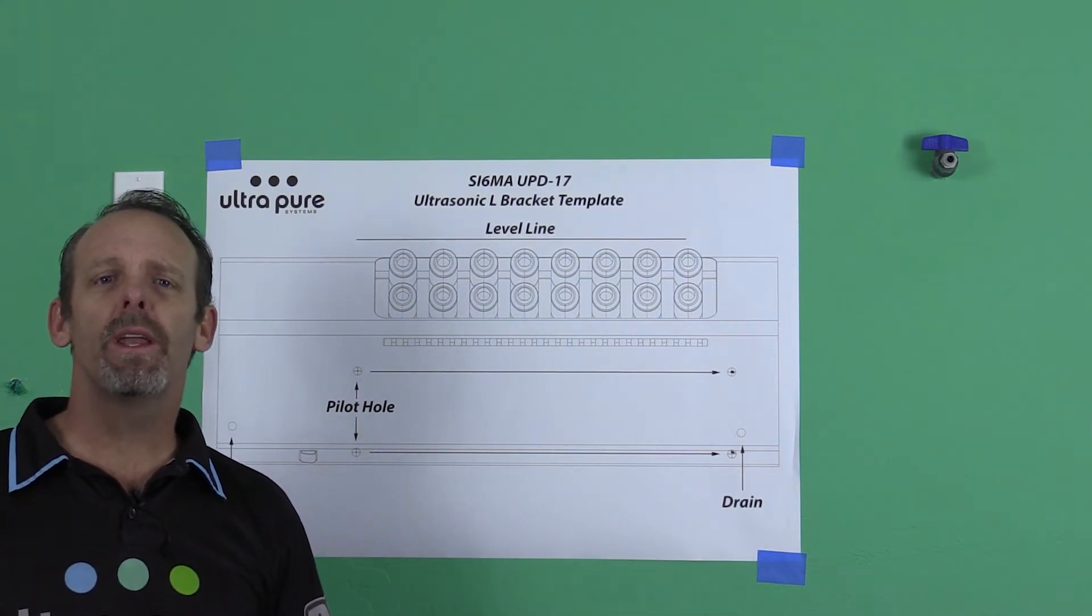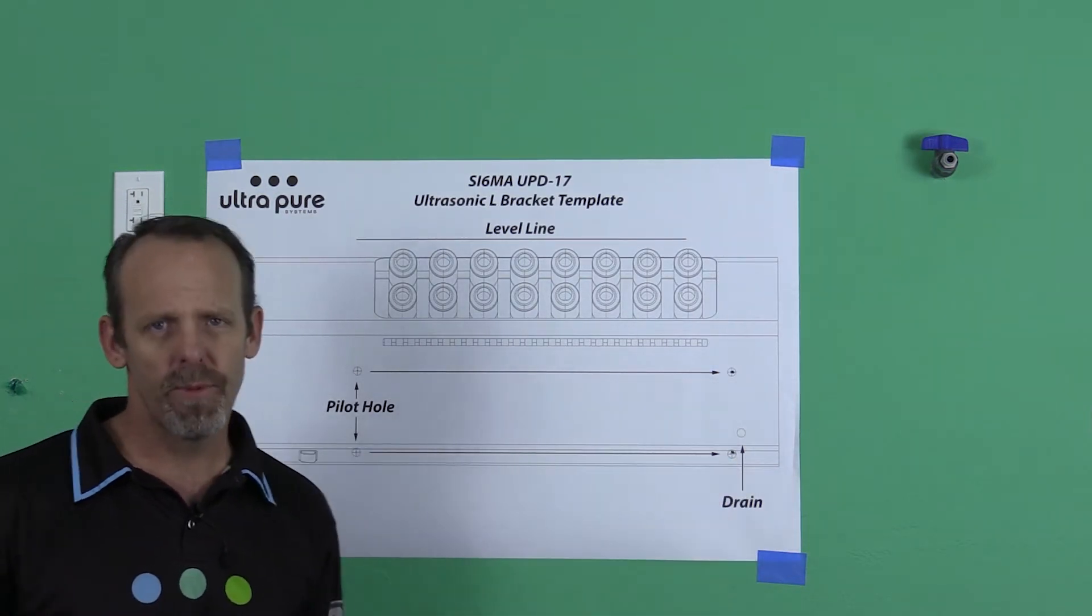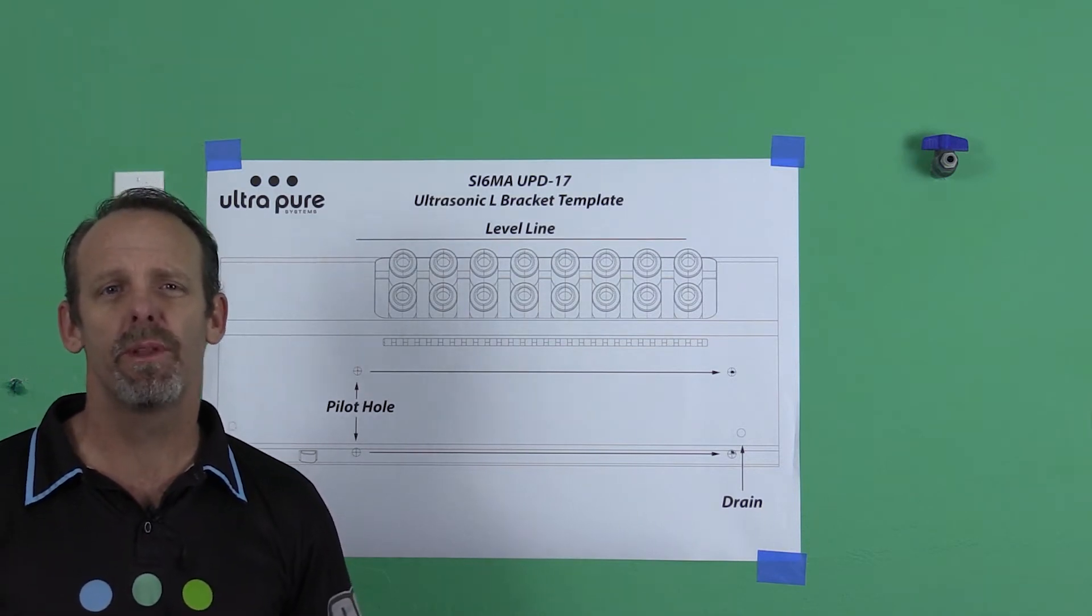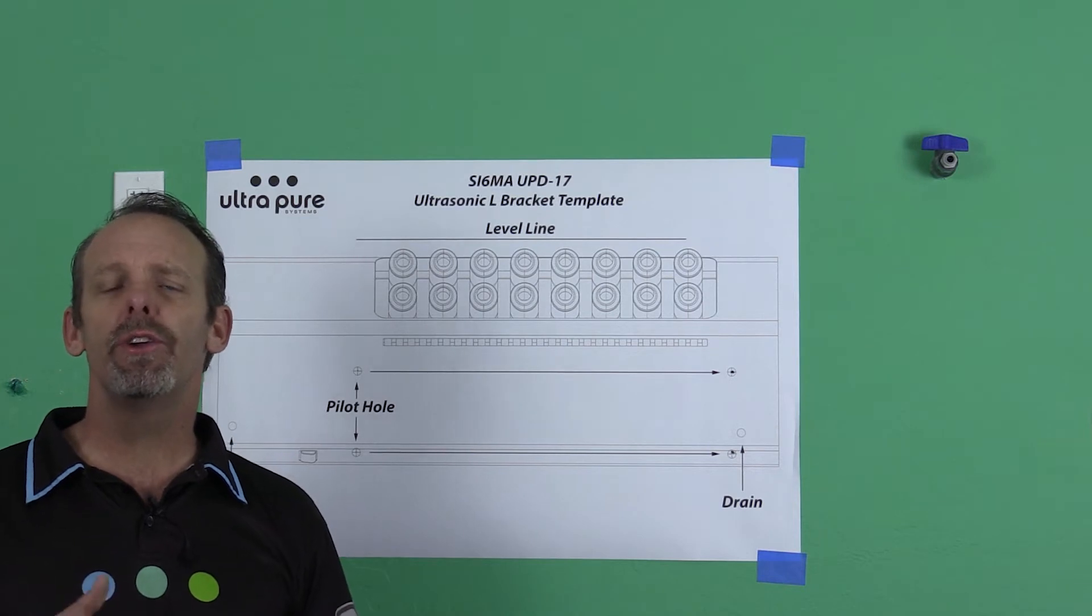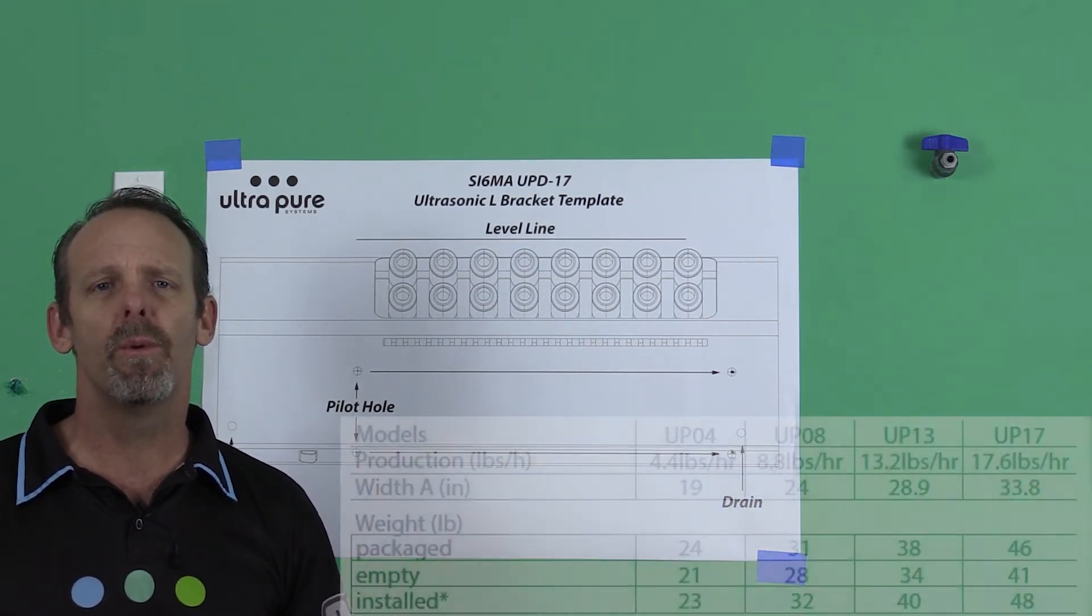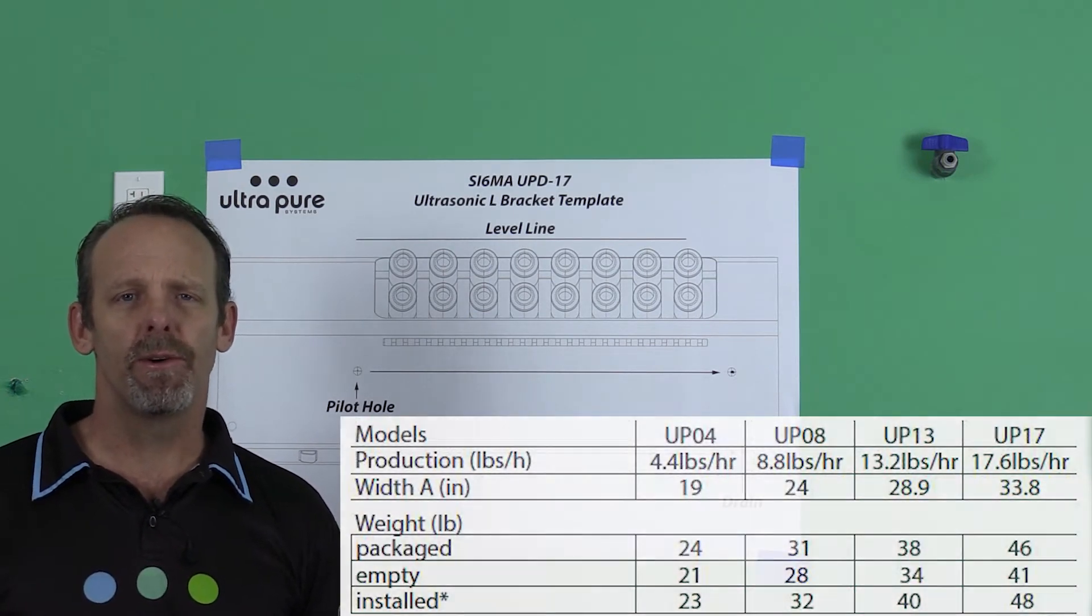Once the template's off the wall, you're going to want to get anchors and that's where you'll use the holes in the wall for. We don't supply anchors. It's the only thing we don't supply. There's just so many variations. But just make sure whichever anchor you do use that it's going to support the weight of the humidifier, and below are the weights of each one we carry. It's also in the IOM manual.